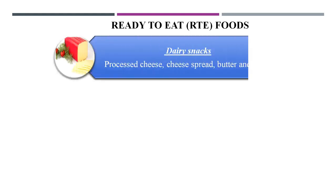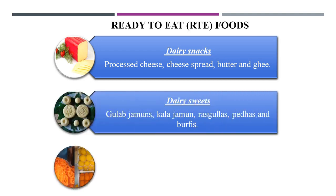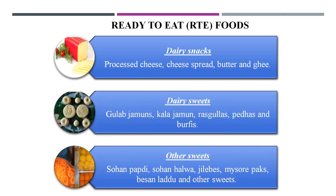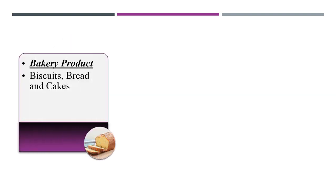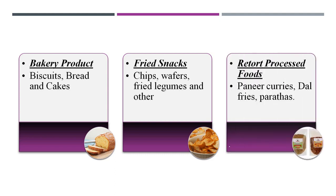Examples of ready-to-eat foods include dairy snacks, dairy sweets, other sweets, bakery products like biscuits, bread, and cakes, fried snacks like chips, wafers, and fried legumes, and ready or processed foods like paneer curries, dal fries, and parathas.